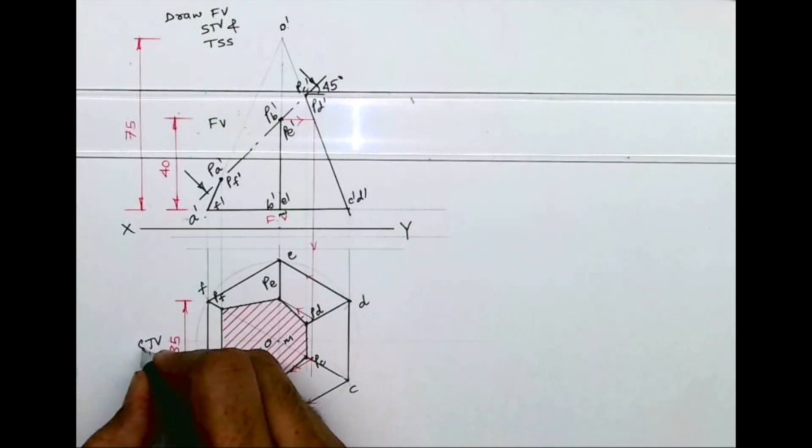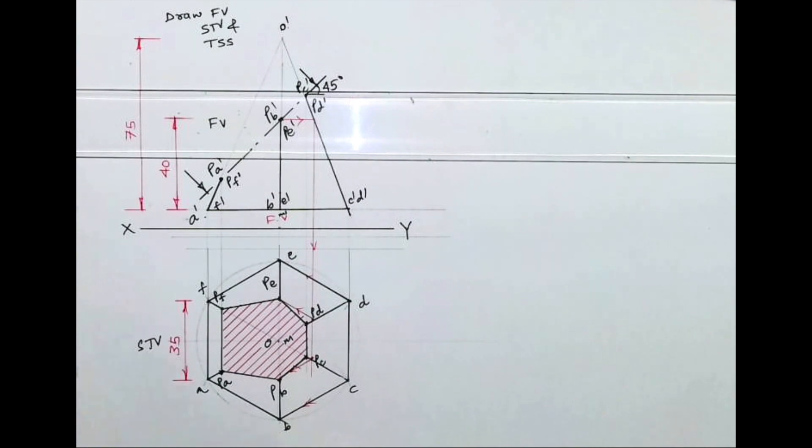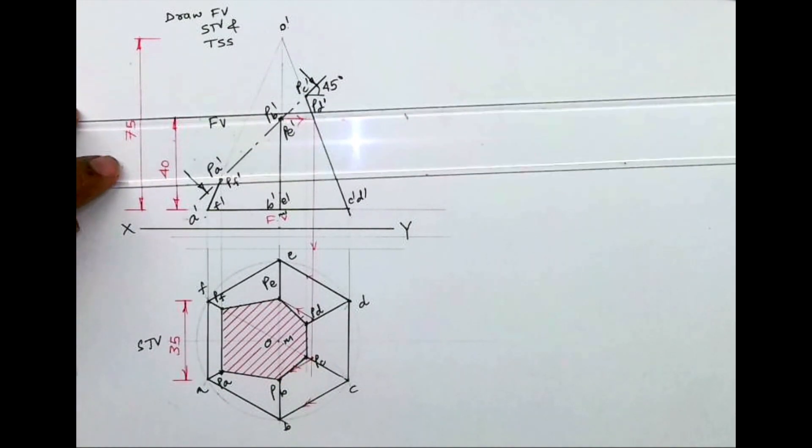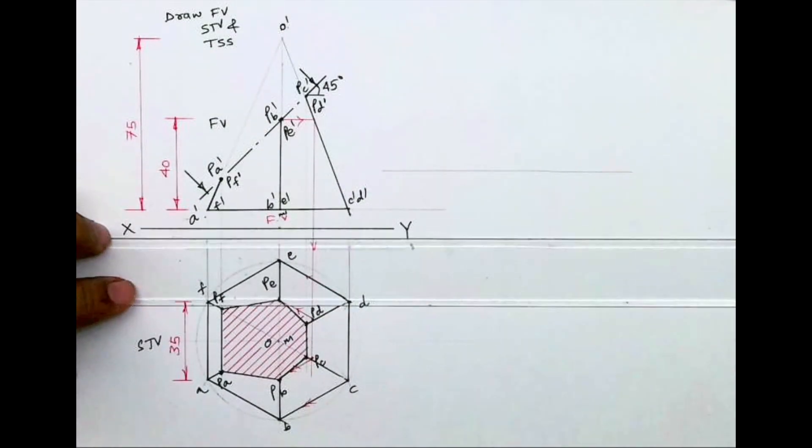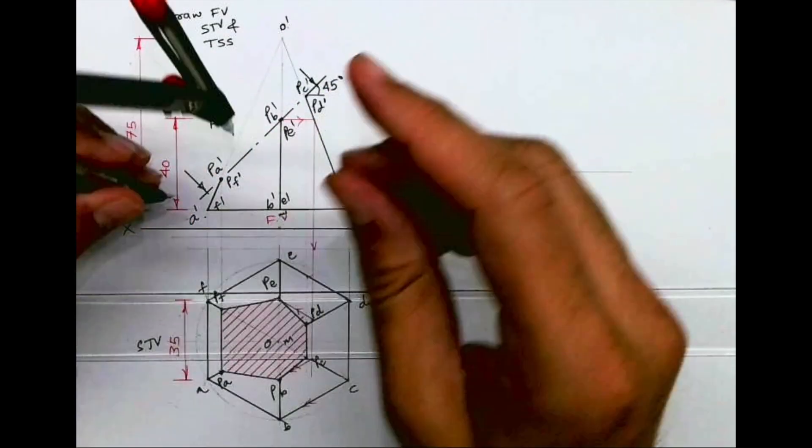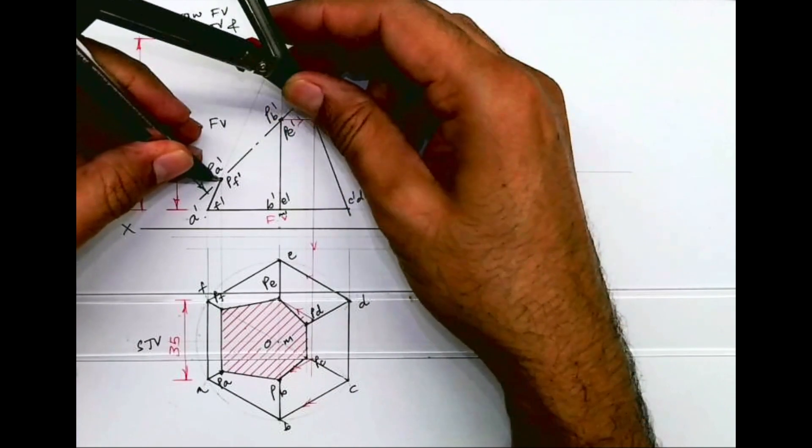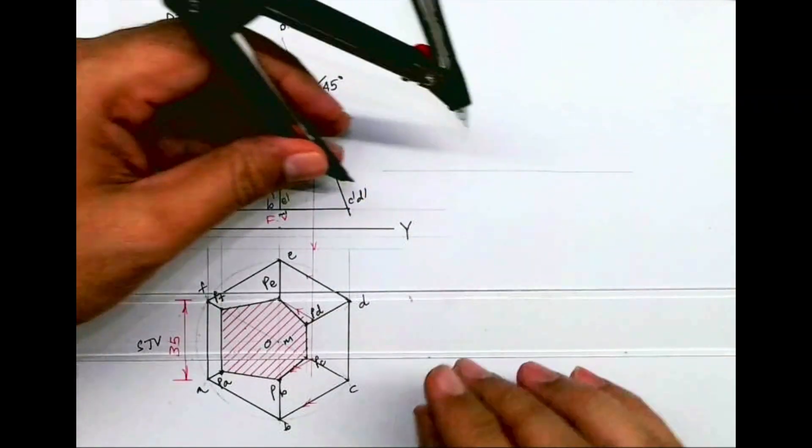Now we'll draw TSS. I'll draw a horizontal line and mark this cutting plane line as it is, from PA dash to PC dash.